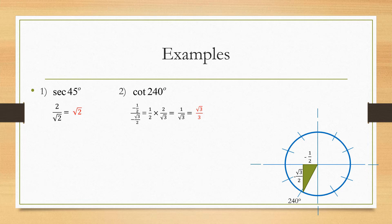With adjacent over opposite, when you have a fraction over a fraction, flip the bottom fraction and multiply it to the top, then simplify. You get one over radical three, but radical three needs to be rationalized, giving you radical three over three.